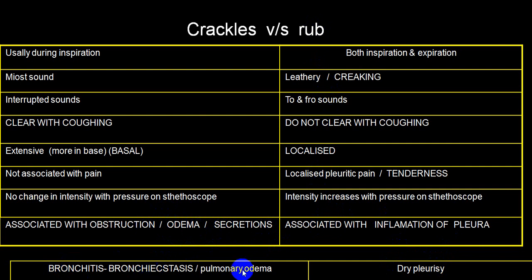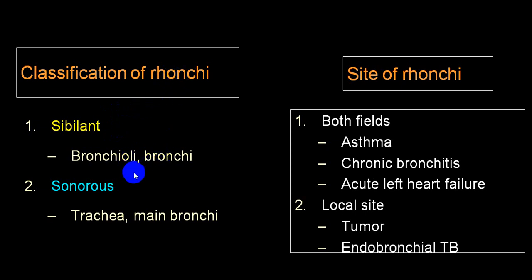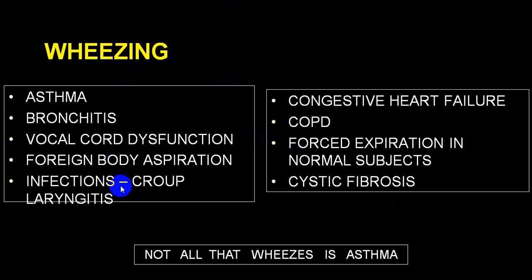Ronchi are divided into two varieties: sibilant (from small bronchi) — classical in bronchitis and bronchiectasis — and sonorous variety — very classical in bronchial asthma. The most common conditions for ronchi are bronchial asthma, chronic bronchitis, and acute bronchitis.